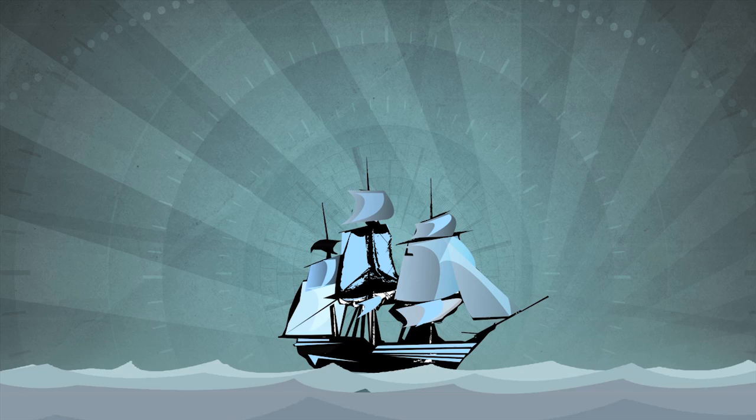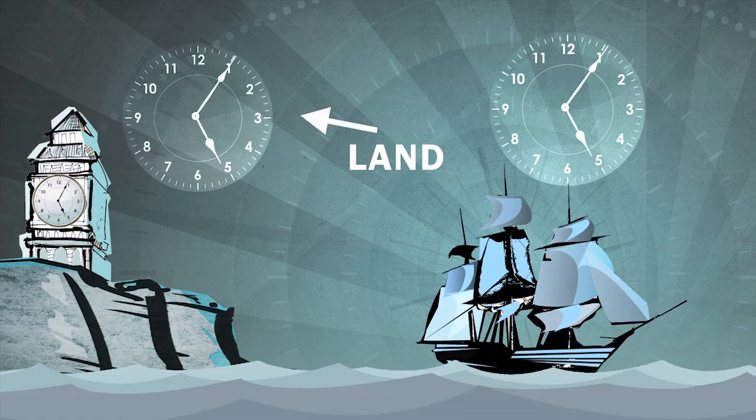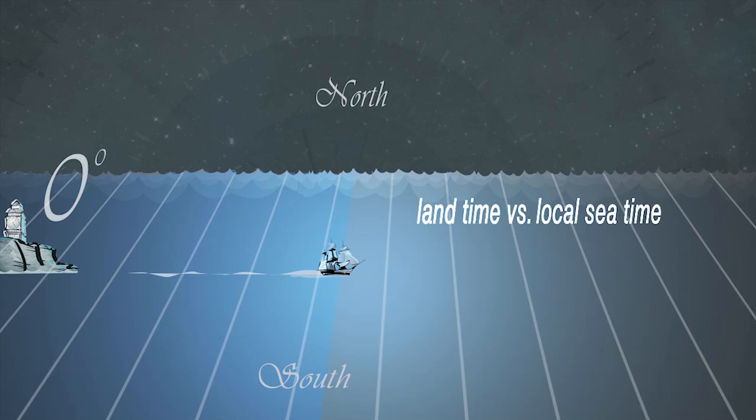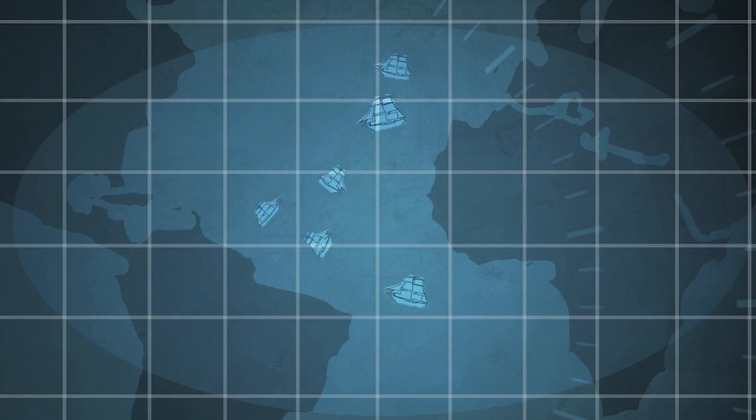These clocks were set to the exact time as a clock back on land, and together with observing the sun, moon and stars, they could determine their longitude and latitude. This process allowed maps to be drawn so other ships could know where they were going. Amazing!